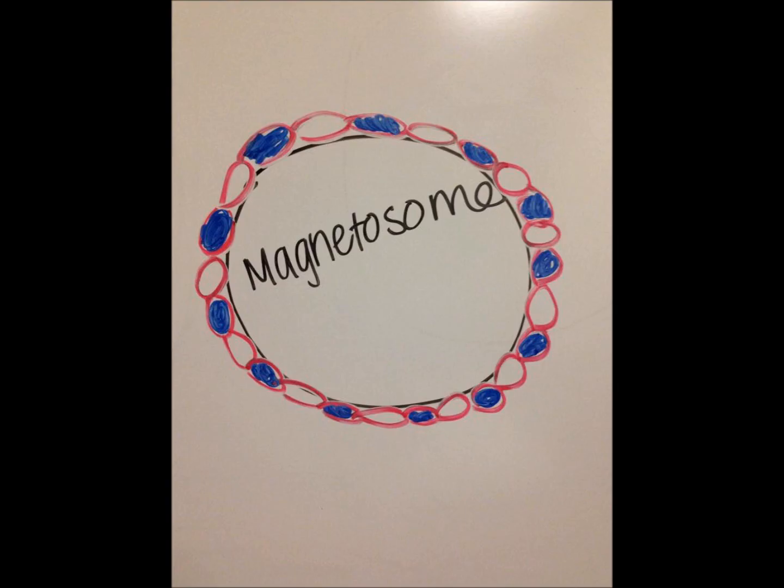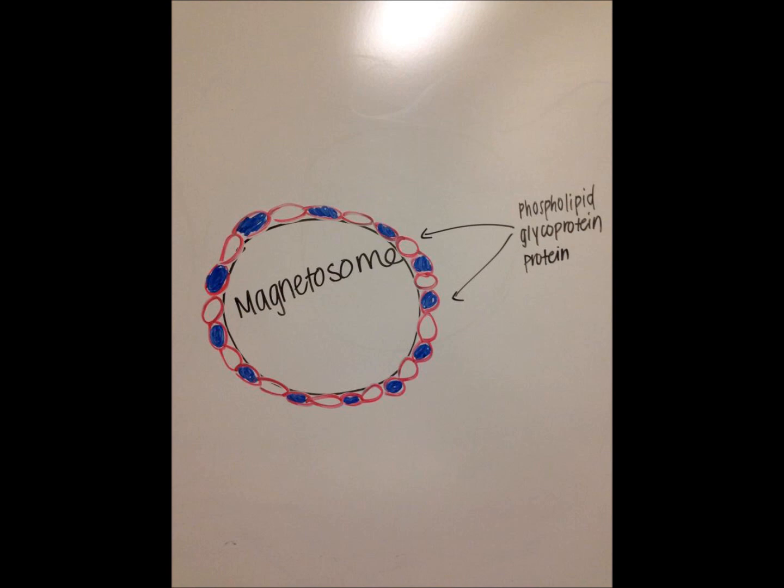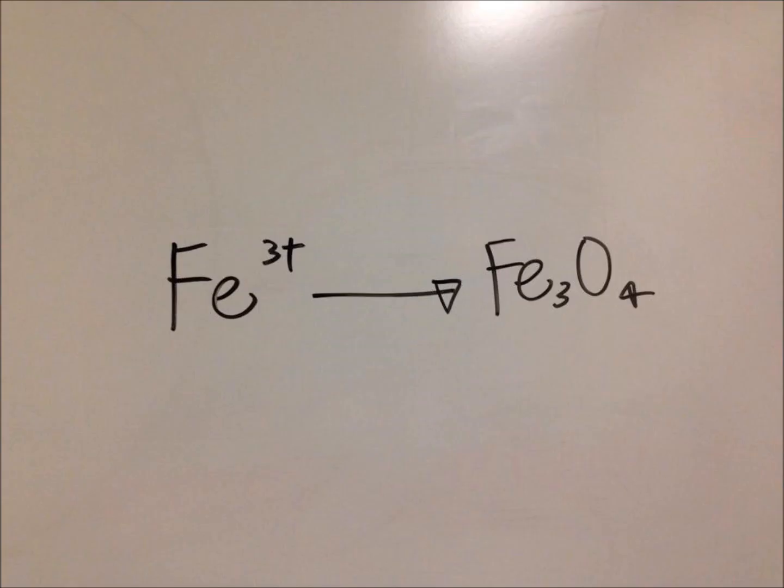Magnetosomes are enclosed by a thin membrane composed of phospholipids, proteins, and glycoproteins, but it is not a true unit membrane. However, the membrane proteins are functional as they catalyze the precipitation of iron during magnetosome synthesis.